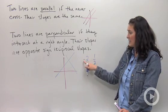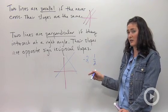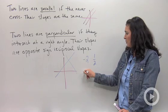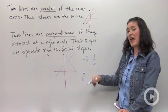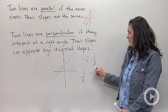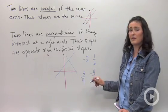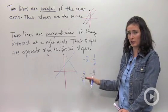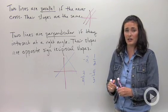These are opposite sign, meaning one's positive, one's negative, and they're reciprocals. Another example would be three fourths, and the opposite sign reciprocal would be negative four thirds. These are the kinds of slopes we're looking for when talking about perpendicular lines.